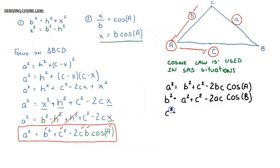And finally, we can say C squared is equal to A squared plus B squared minus 2AB cos C. And that is how we prove or derive the cosine law. Hope that helped.